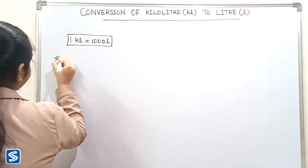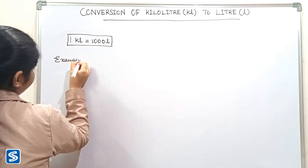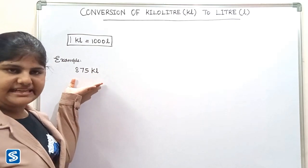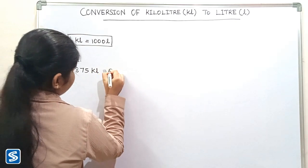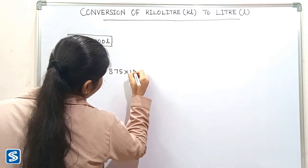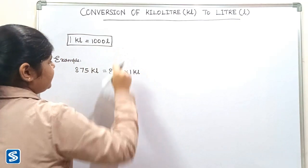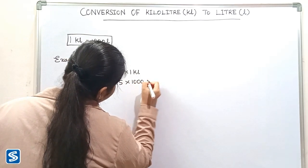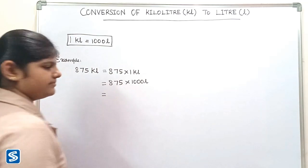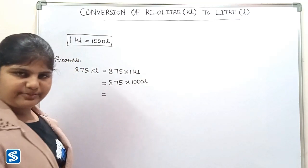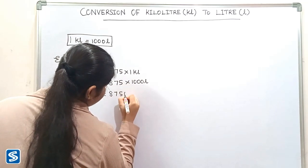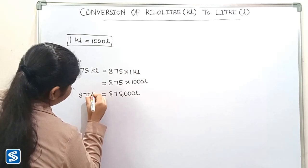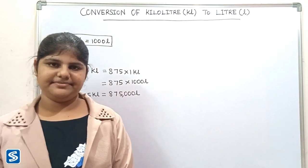Now we will take some examples. For example, we can take 875 kiloliters. 875 kiloliters can be written as 875 multiply one kiloliter. Now we have to substitute one thousand liters in the place of one kiloliter, so 875 multiply one thousand liters will be 875 thousand liters. So 875 kiloliters is equal to 875 thousand liters.